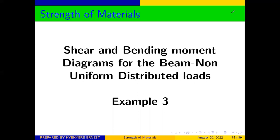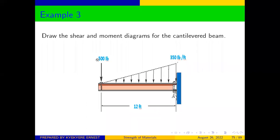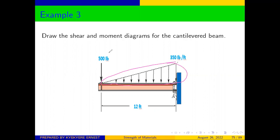Let's look at our question and how to solve it. Draw the shear and bending moment diagram for the cantilever beam. We can see that this is not a uniform distributed load — it is a non-uniform distributed load. So how do we draw the bending moment and shear force diagram for this?